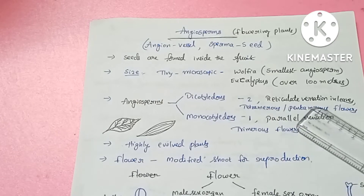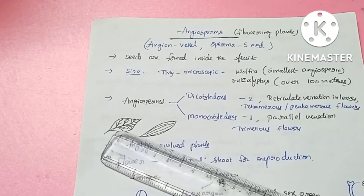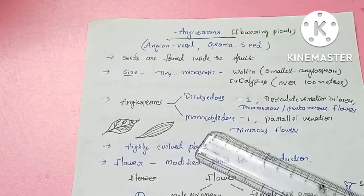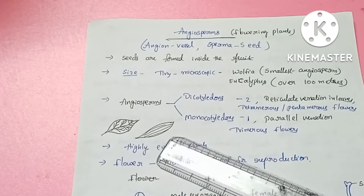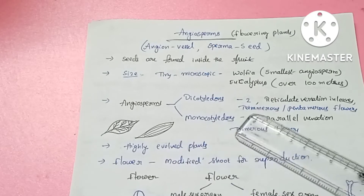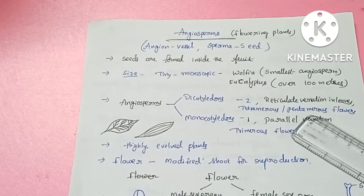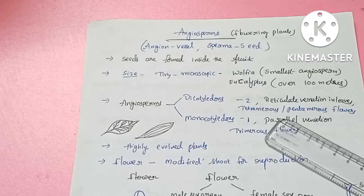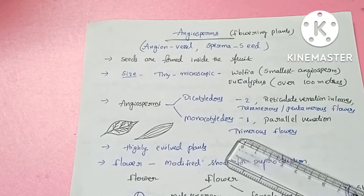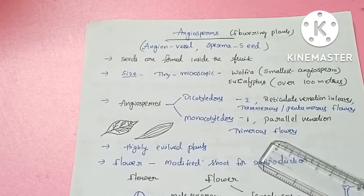In dicotyledons, the leaves have reticulate venation — networks of veins. In monocotyledons, there is parallel venation. In dicotyledons, there are tetramerous or pentamerous flowers with 4 or 5 rows of petals.